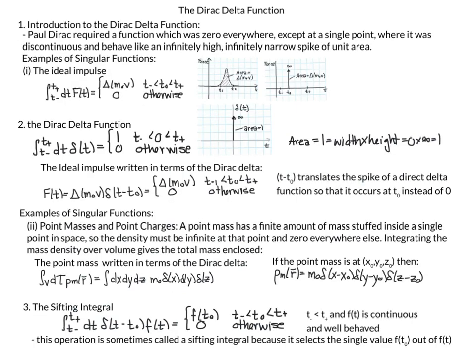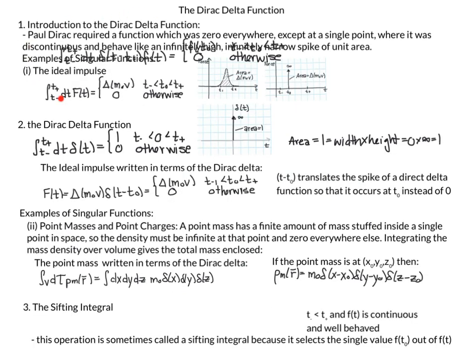Returning to the overview slide: we've talked about the ideal impulse and used it to motivate the definition of the Dirac Delta, then wrote the ideal impulse in terms of the Dirac Delta. Next we'll look at point masses and point charges.